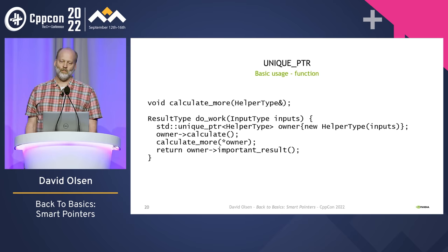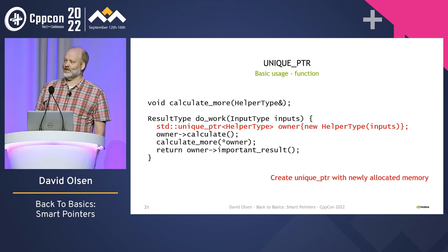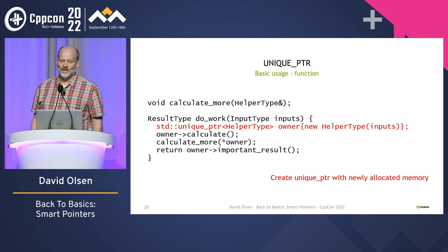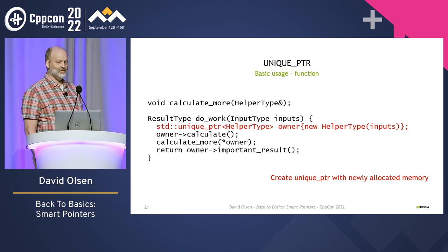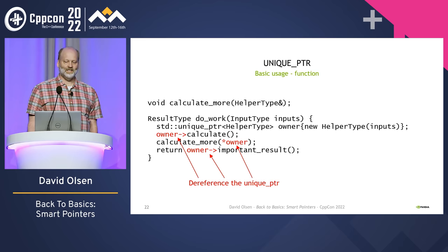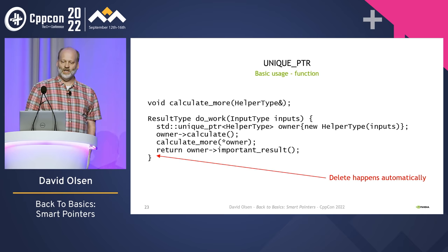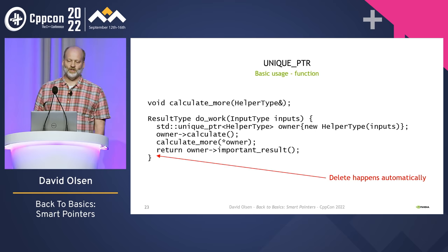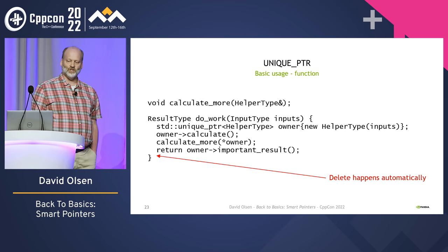Assume that our code uses the type HelperType, which for whatever reason should always be allocated on the heap. We'll define a variable — let's call it 'owner' so its purpose is very clear — of the type unique_ptr<HelperType>. We initialize it with a pointer to a newly allocated HelperType object. Now the variable 'owner' owns the memory and has the responsibility of cleaning up when it is done. We can dereference the unique_ptr using either the arrow operator or the star operator. When the unique_ptr 'owner' goes out of scope, its destructor will automatically call delete, both destroying the HelperType object and freeing the memory. We don't have to remember to call delete or make sure the delete happens on all possible paths through the function — the delete happens automatically no matter how we exit the function.